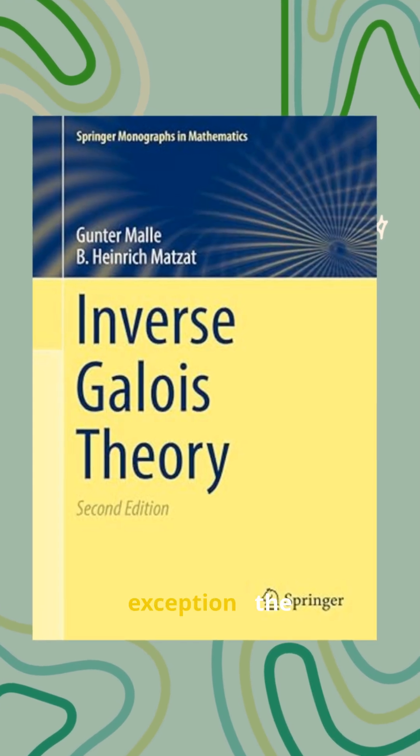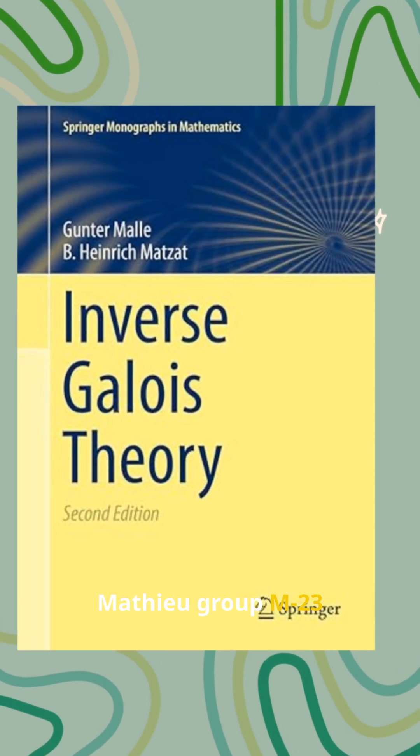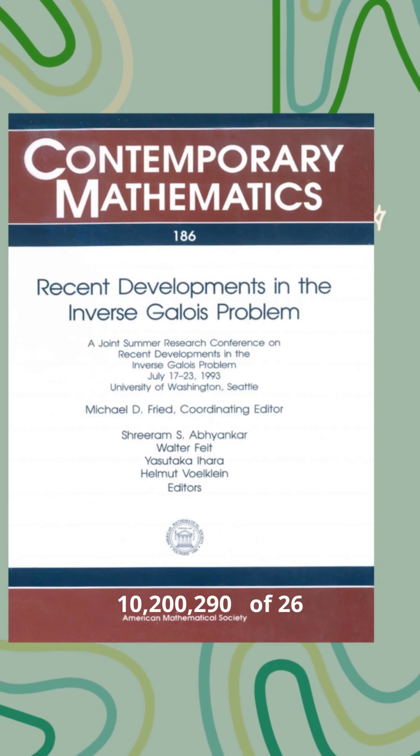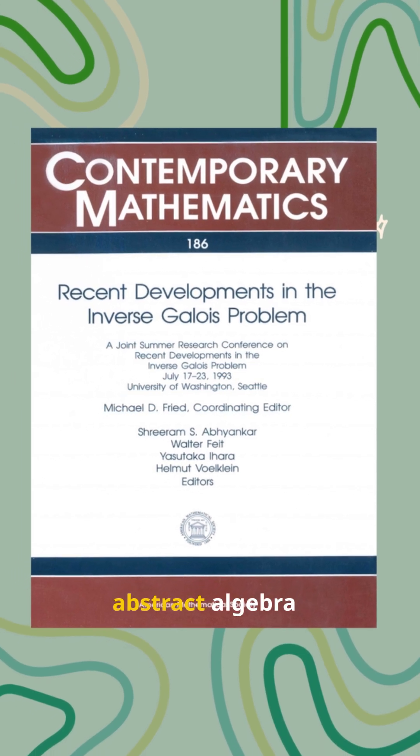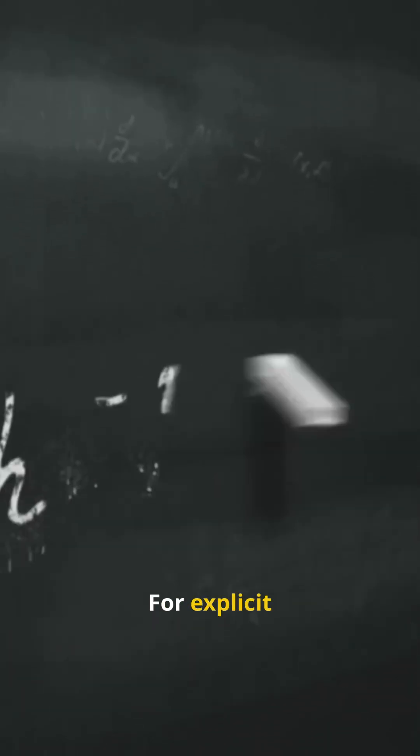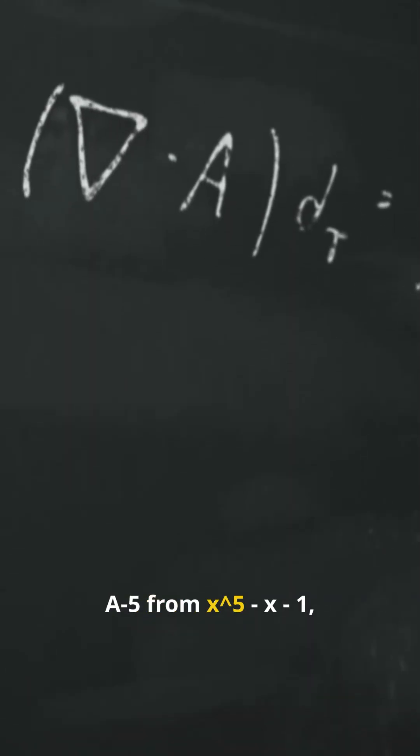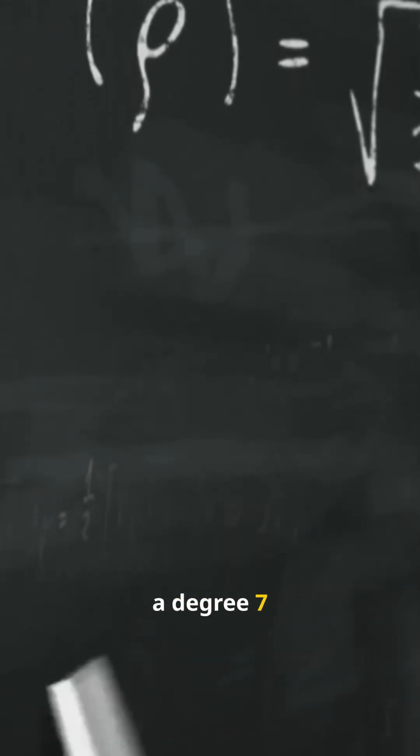One stubborn exception: The Mathieu group M23 remains elusive, a sporadic simple group of order 10,200,960, one of 26 sporadic groups in abstract algebra. For explicit examples, S3 from X³ - 2, A5 from X⁵ - X - 1, and PSL(2,F7) via a degree 7 polynomial.